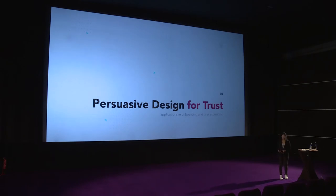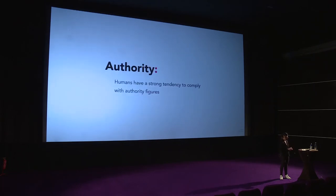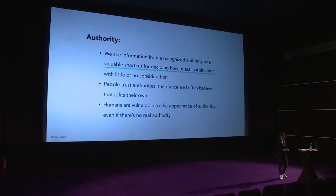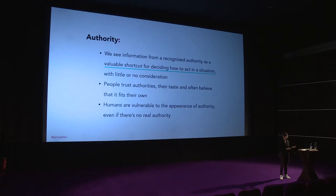Next, I want to talk about designing for trust, which is really important in onboarding and user acquisition. Only if users trust you will they buy from you, have a nice experience, and come back again. One pattern that achieves this is authority. We humans have a strong tendency to comply with authority figures and trust authority as a shortcut for deciding how to react. The brain is constantly looking for shortcuts — like scarcity or authority — in order to make quick decisions, because decision-making takes brain energy and the brain doesn't like to waste it.